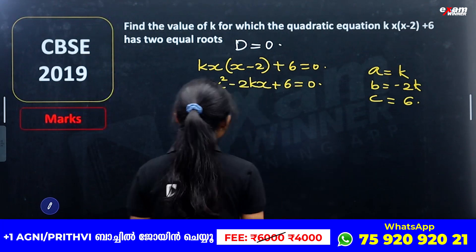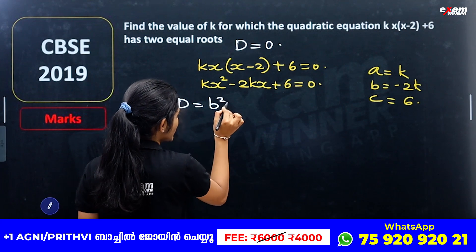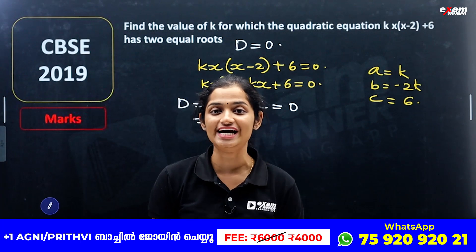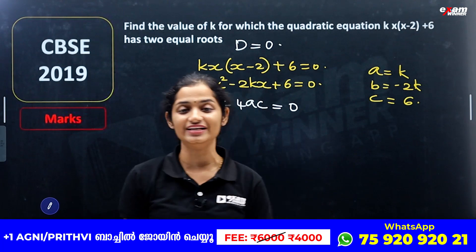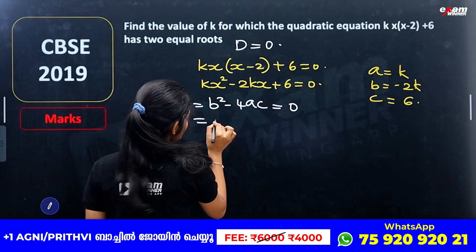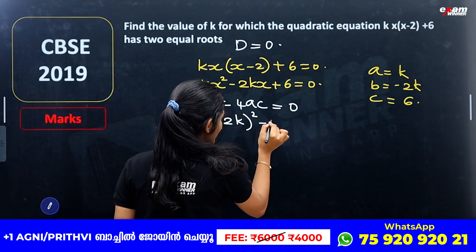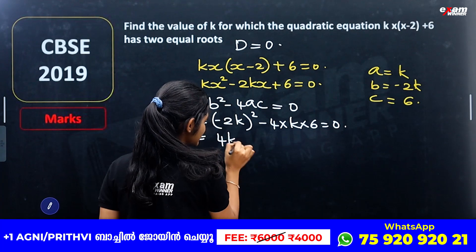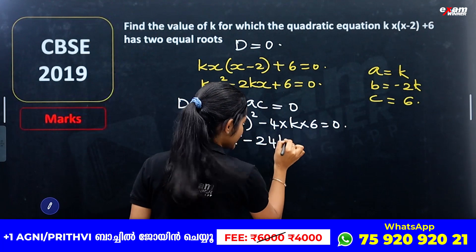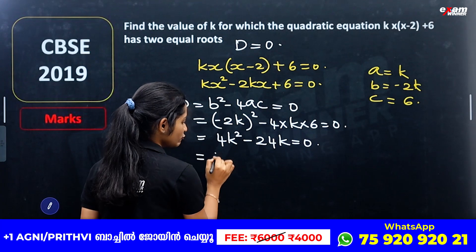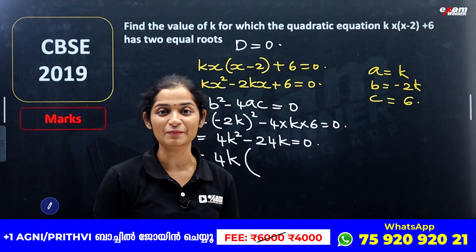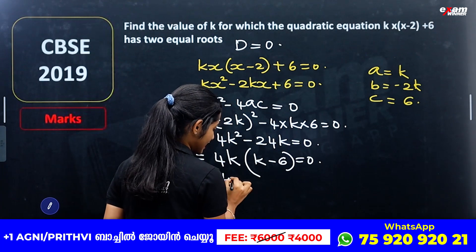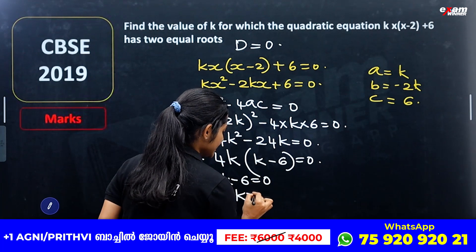We will solve this. Since D = 0, we set b² - 4ac = 0. Because it has two equal roots, the discriminant is 0. So (-2k)² - 4 × k × 6 = 0, which gives 4k² - 24k = 0. So 4k(k - 6) = 0, therefore k - 6 = 0, which means k = 6.